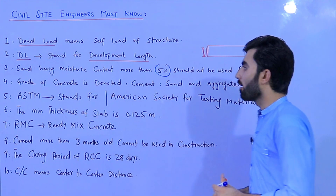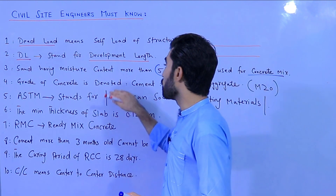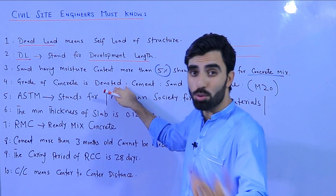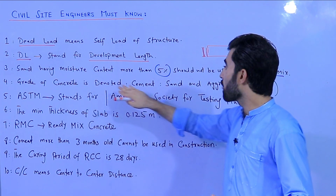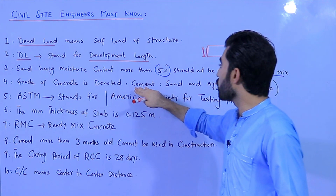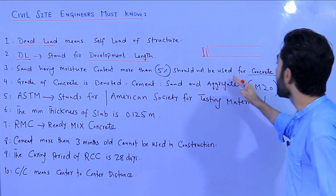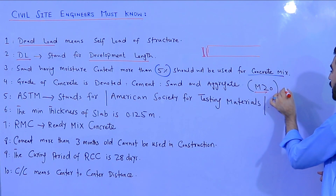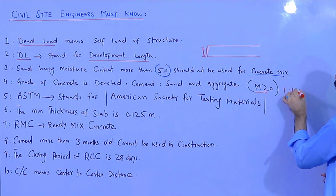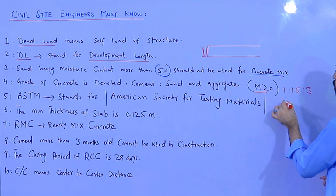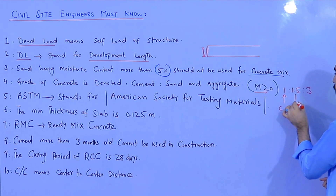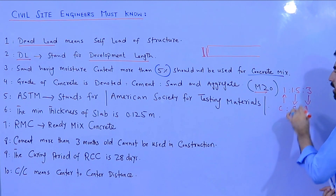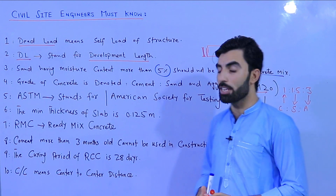The fourth point: grade of concrete is denoted by cement, sand, and aggregate ratios. For example, M20 means the ratio is 1:1.5:3 — where 1 is cement, 1.5 is sand, and 3 is aggregate. So the grade of concrete represents the proportion of cement, sand, and aggregate used in the mix.